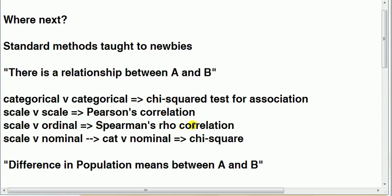If we have something that's scale versus something that's nominal, what we would do is convert that scale into something that's categorical, so then it would be categorical versus categorical which can use the chi-squared test.